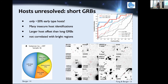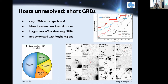Short GRBs were always expected to be in different host galaxies, since the model involves coalescence of two neutron stars formed in older systems. We thought they should occur mostly in old, elliptical galaxies, but actually only a small percentage are in early-type galaxies. Most are in late-type galaxies still actively forming stars, though not at the extremely high rates seen in long GRB hosts.